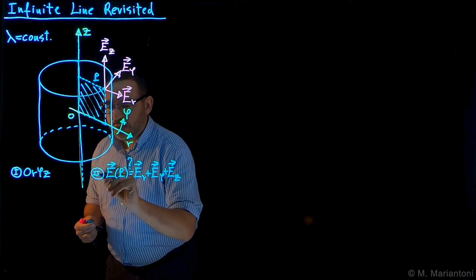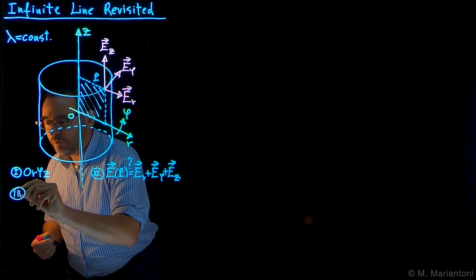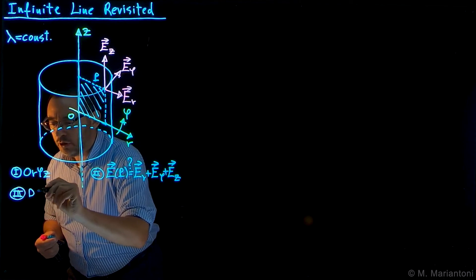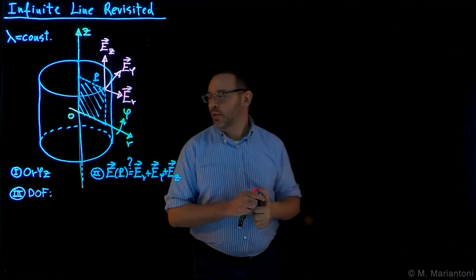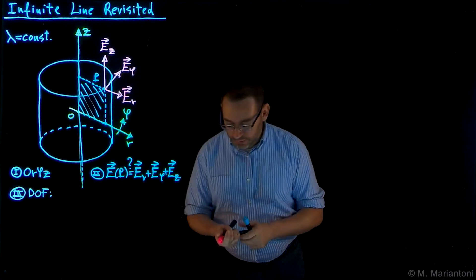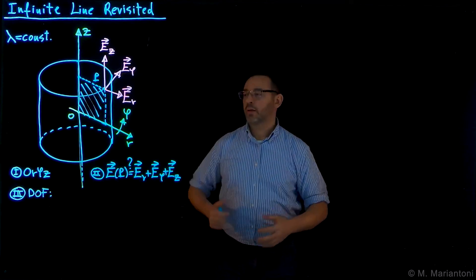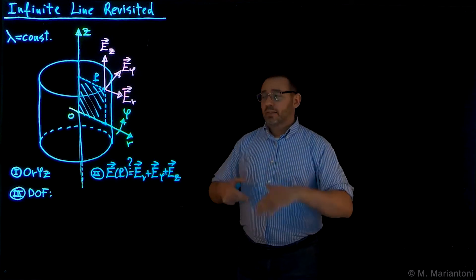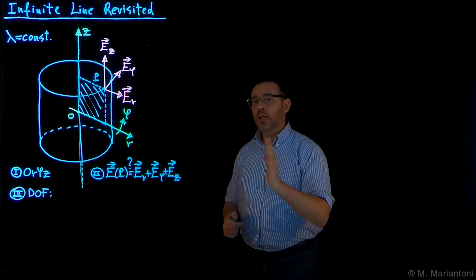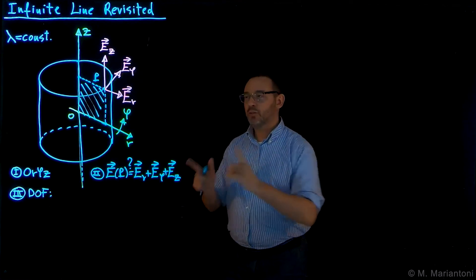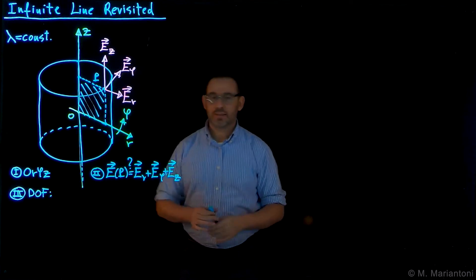The next step, as always, is to identify the degrees of freedom — step 3, DOF. In order to identify the DOFs in this case, we must take advantage of all possible symmetries associated with an infinite straight line. This is the key part of this problem.